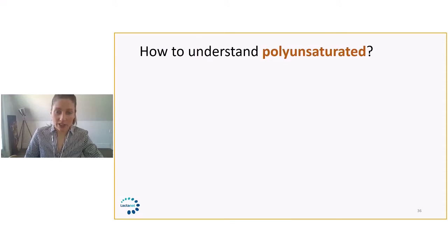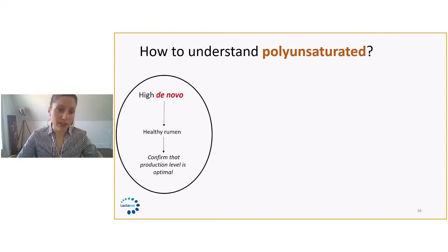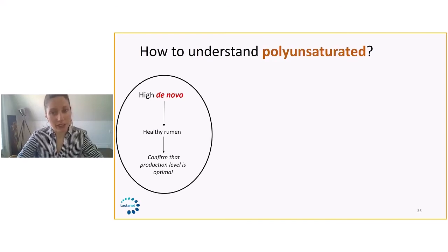How to understand polyunsaturated? This is really our approach. It's divided into two categories. The first one is when we have high de novo, we don't really look at polyunsaturated that much. When de novos are high, we assume that the rumen is healthy as the de novo really reflect rumen health. If everything is right in terms of de novo level, we're satisfied. We can confirm the production level and make sure that the objectives of the producers are reached.